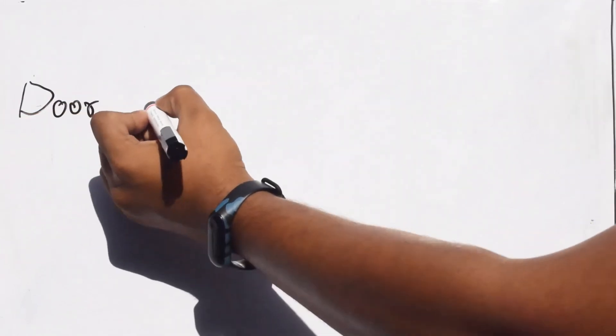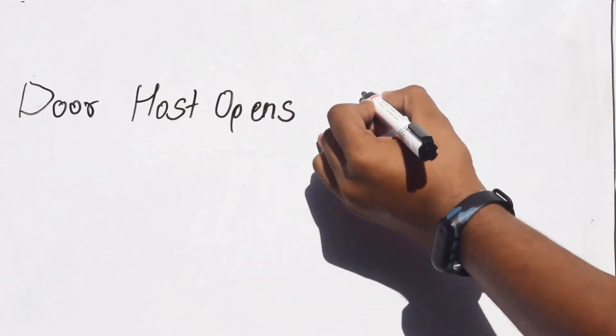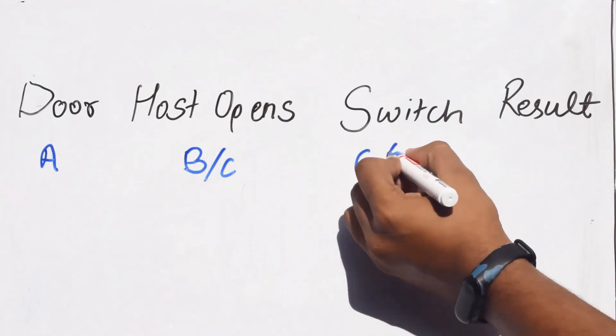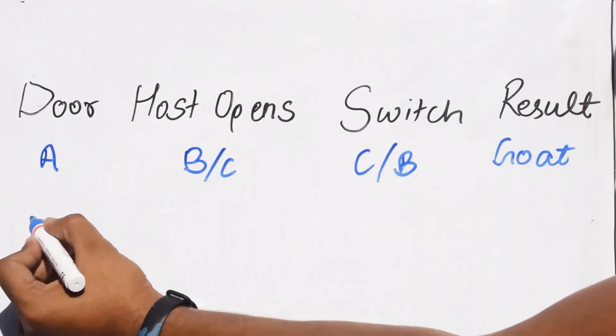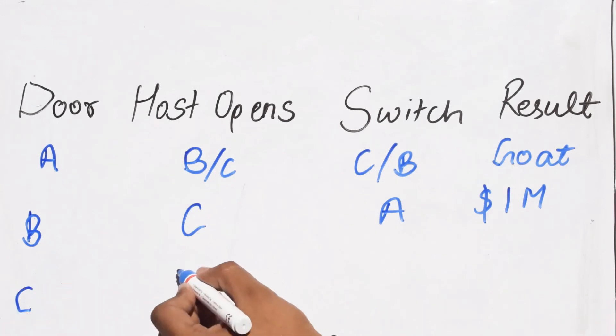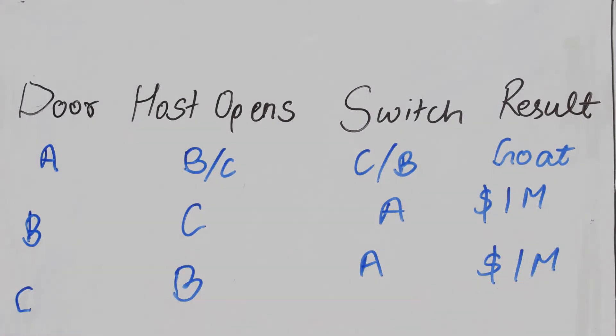But as we know, the probability of getting the wrong door on initial guess is 2/3, which tells us that we have a higher chance of getting the wrong door initially. We should always switch after the host reveals a door without the money, giving us a 2/3 chance of winning the money if we switch.